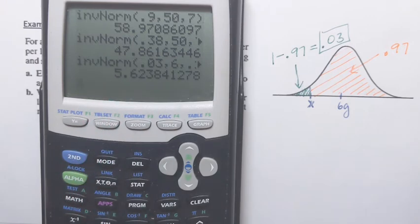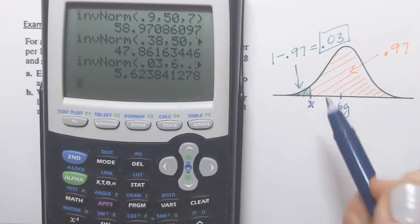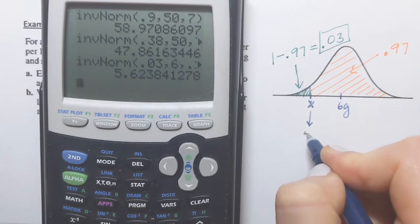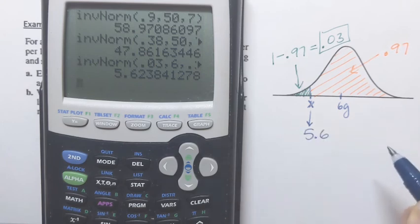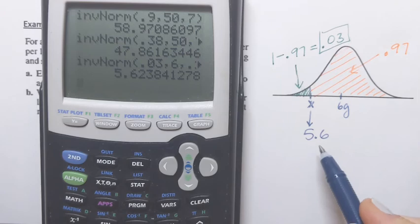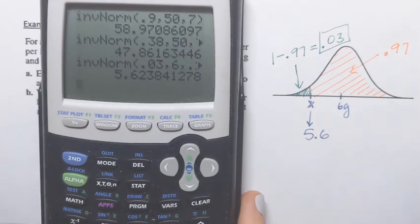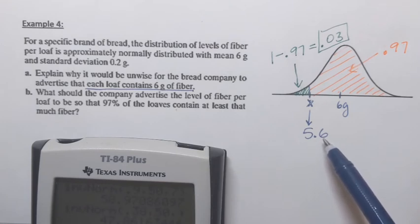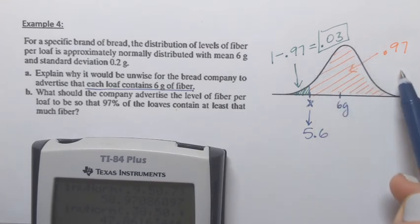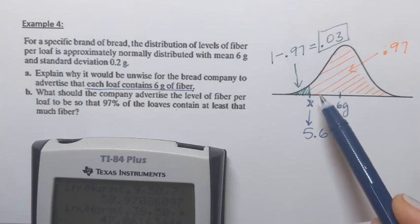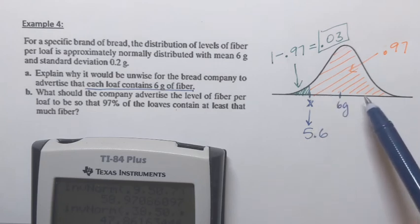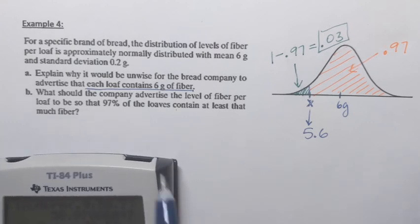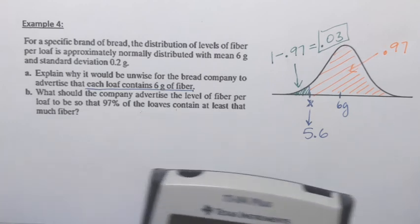And that's the value of this random variable. X is 5.6. But what is the meaning of that number in the context of our example? 5.6 grams is such number that 97% of loaves have this much of fiber or more. And that's what the company should advertise on their package if they want that condition.